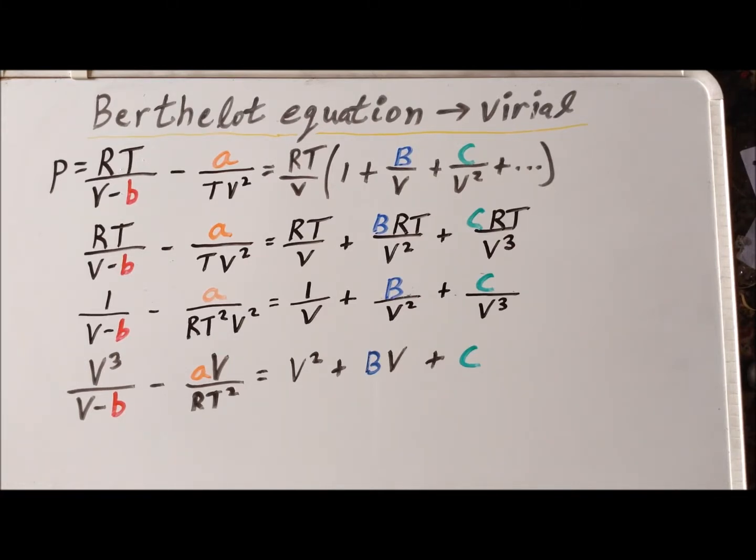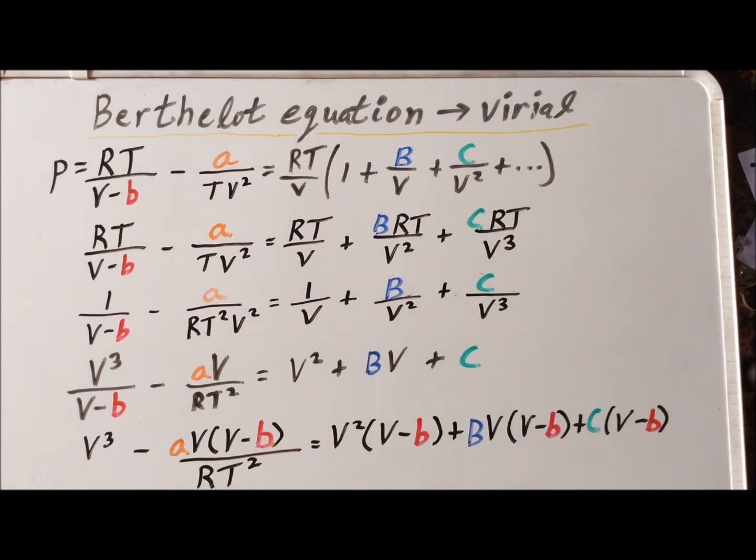In the next step, we are going to multiply through each side of the equation by the quantity V minus B, thereby limiting the amount of fractions that we have to deal with. Performing that operation, we then get the very complicated equation that we see on the bottom line. At least temporarily, it seems that we've made our work more complex, but we're going to see when we start multiplying out the terms, this will lead to a simplification in the near future.